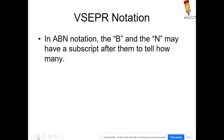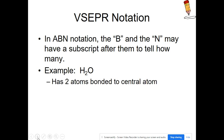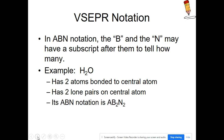In the ABn notation, B and n may have a subscript to indicate how many bonding and non-bonding regions there are. For water (H2O), there are two atoms bonded to the central atom and oxygen has two lone pairs, so the notation would be AB2N2, and this will determine which shape we pick for water.